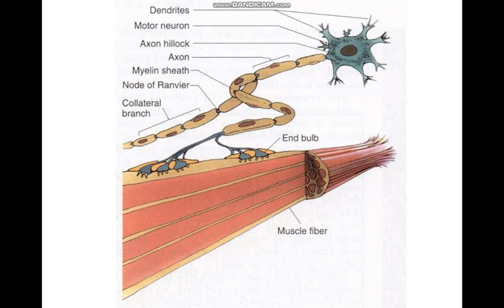The myelinated segments are separated by nodes of Ranvier — interruptions in the myelin sheath. The area between the two nodes is called the internode. The initial segment runs from the axon hillock up to the first myelinated segment. The longer the neuron, the longer will be the internode and the thicker will be the myelin sheath.